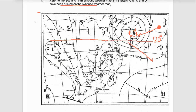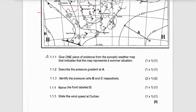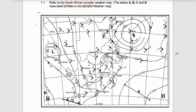Let's erase that and jump into our questions. Question 1.1, point 1: Give one piece of evidence from the synoptic weather map that indicates that the map represents the summer situation. Let's look at our map and pick up some features showing this synoptic weather map represents the summer situation.